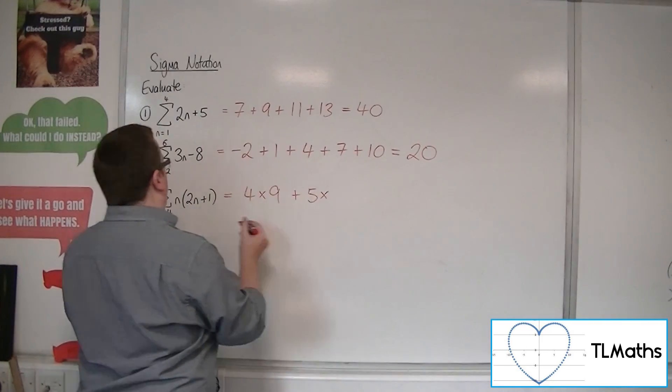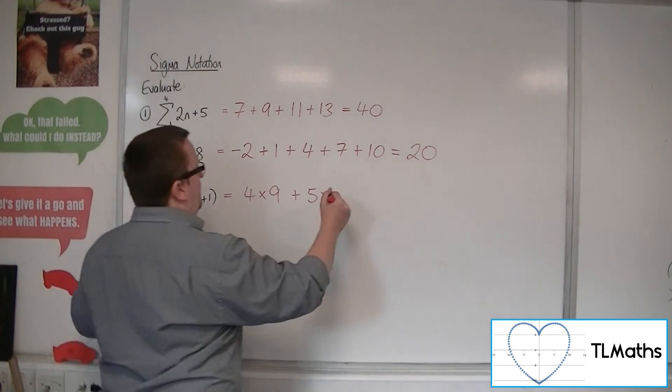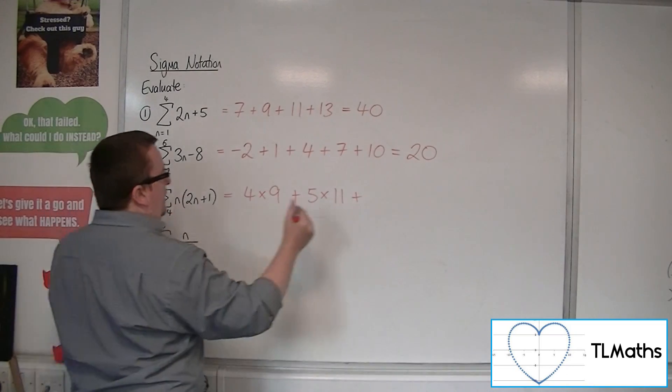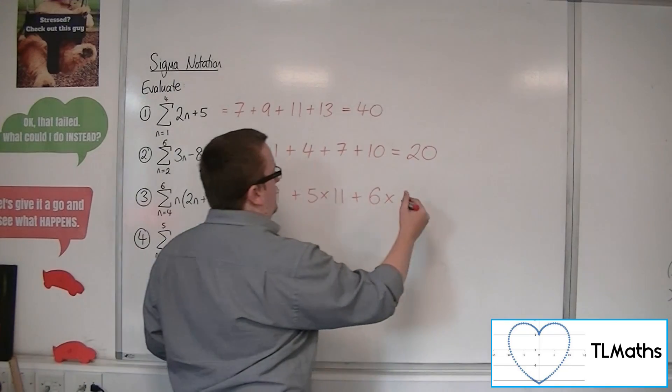we get 5 times 2 lots of 5 plus 1, so 11. And then finally, when n is 6, we get 6 times, well, 9, 11, 13. OK.